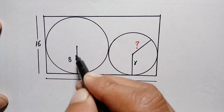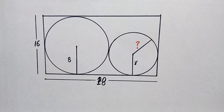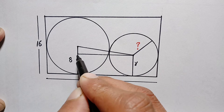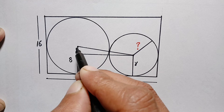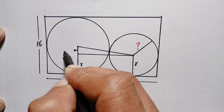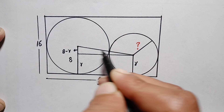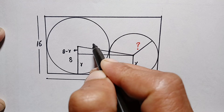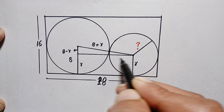We will draw a perpendicular from this center to the radius of the bigger circle, and we will also join the centers of these two circles. Here the radius of the smaller circle is small r. The length parallel to the side is also small r. The remaining length from 8 units is 8 minus r. The length joining the two centers is the sum of both radii, which is 8 plus r.